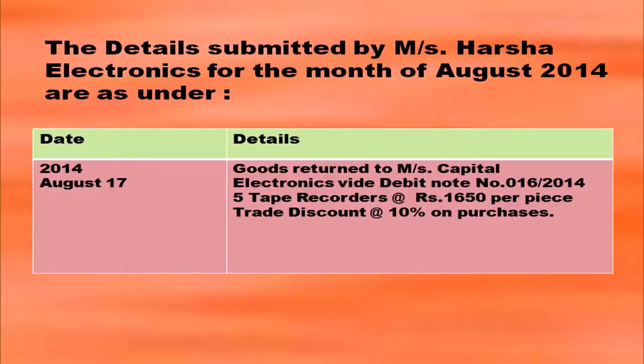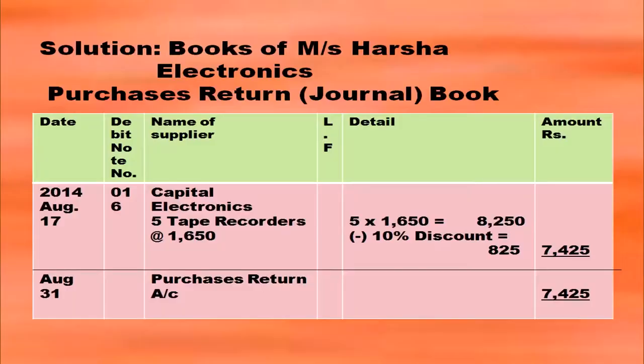Here is a question about Messrs. Harsha Electronics who returned some goods to Messrs. Capital Electronics: 5 tape recorders at rupees 1,650 per piece with trade discount at 10 percent on purchases. To write the purchase returns book, the heading is Books of Messrs. Harsha Electronics and purchases returns journal or purchases returns book. Then with date, debit note number, name of supplier, ledger folio column, details and amount.